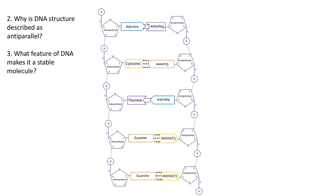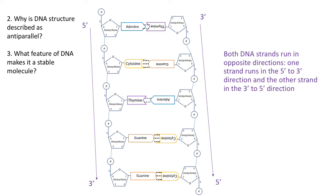the strand on the left runs from the five prime to three prime end, and then the complementary strand on the right runs from three prime to five prime. Because the strands in double-stranded DNA run in opposite directions, that's why it's described as antiparallel.